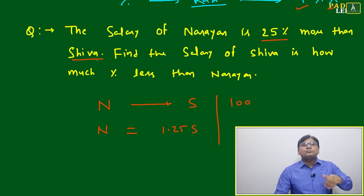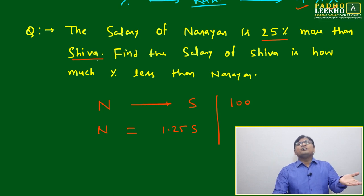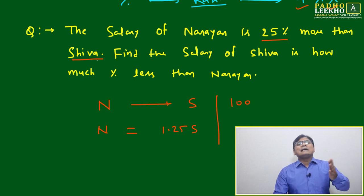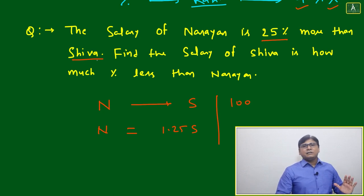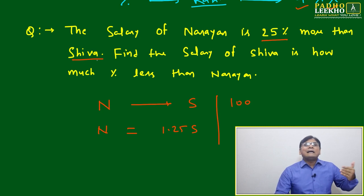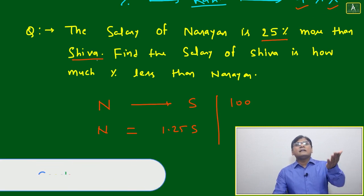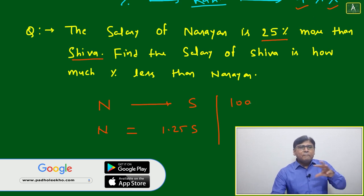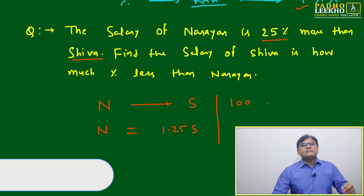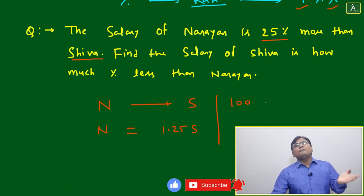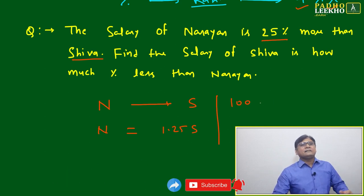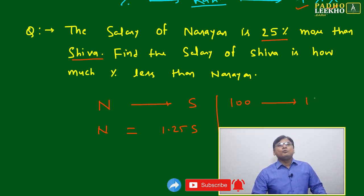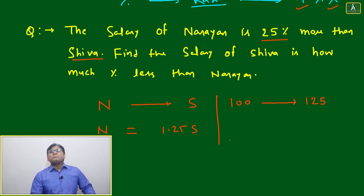If Shiva's salary is 1000, Narayan's will be 1250 — that's 25% more. If Shiva's salary is 2000, Narayan's will be 2500. If Shiva's salary is 2 lakh, Narayan's will be 2 lakh 50 thousand. When the base is not given, we take the ideal base of 100 — that's what 'percent' means.